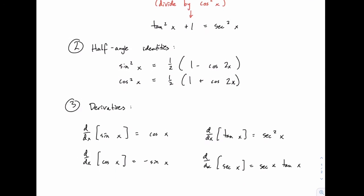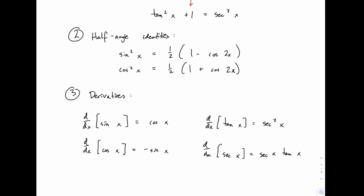Lastly, here is a reminder of the derivatives for sine, cosine, tangent, and secant, which should be relatively familiar from calculus 1. You should remember that the derivative of sine is cosine, the derivative of cosine is negative sine, the derivative of tangent is secant squared, and the derivative of secant is secant tangent. With all of that we're ready to do some problems and we'll use these identities as they become useful.